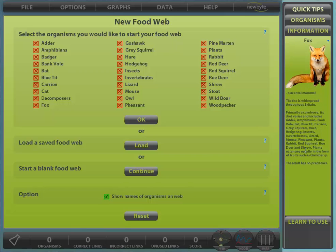We'll select a few organisms to start our Web: Fox, Rabbit, and of course plants. To start constructing a Web, click OK.